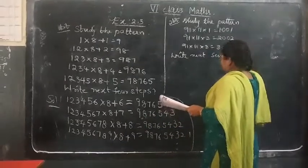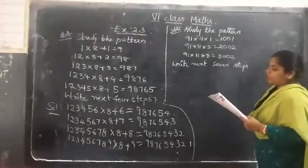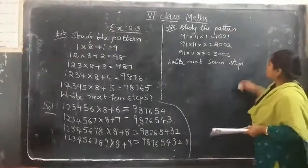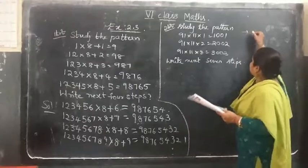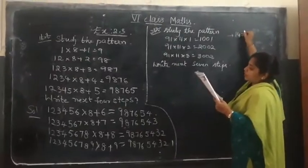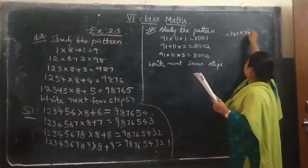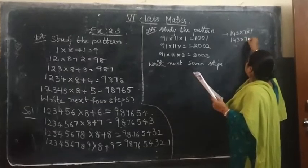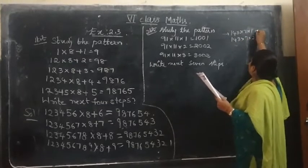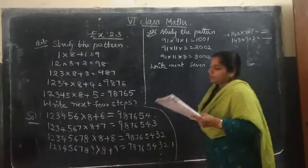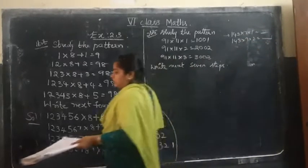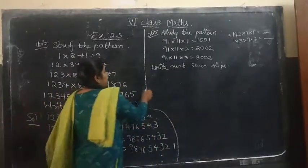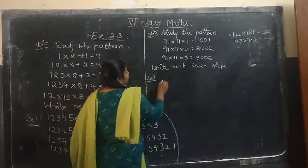And one more question has been given: 143 × 7 × 1 and 143 × 7 × 2. So that way you can do it as a number pattern. We have to write the next seven steps for this as well. So how to write the next seven steps here?